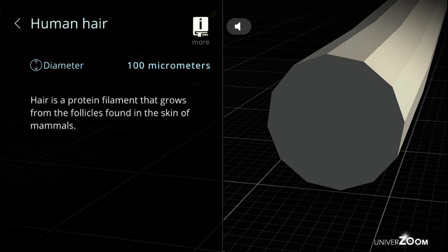Human hair, diameter: 100 micrometers. Hair is a protein filament that grows from the follicles found in the skin of mammals.